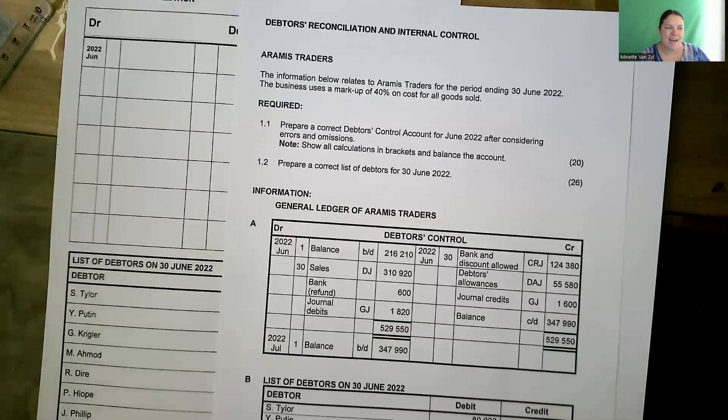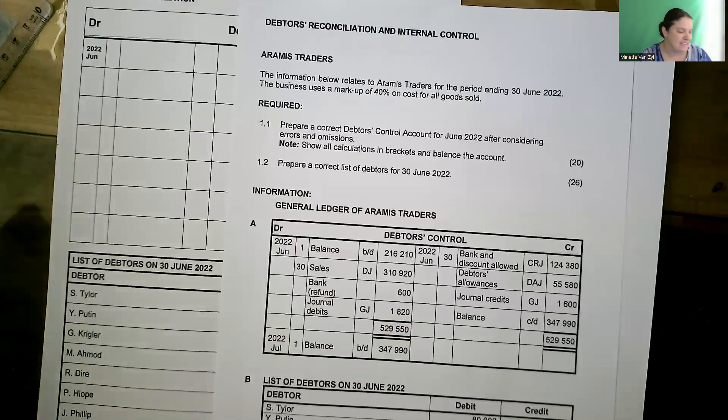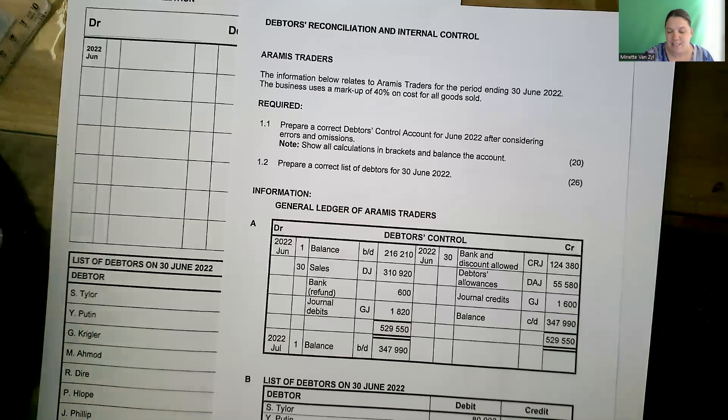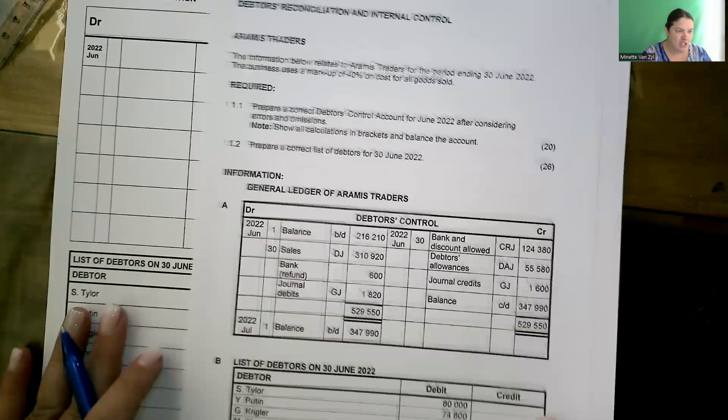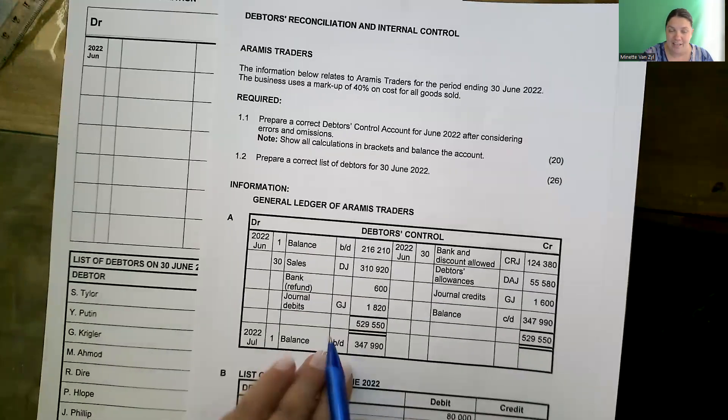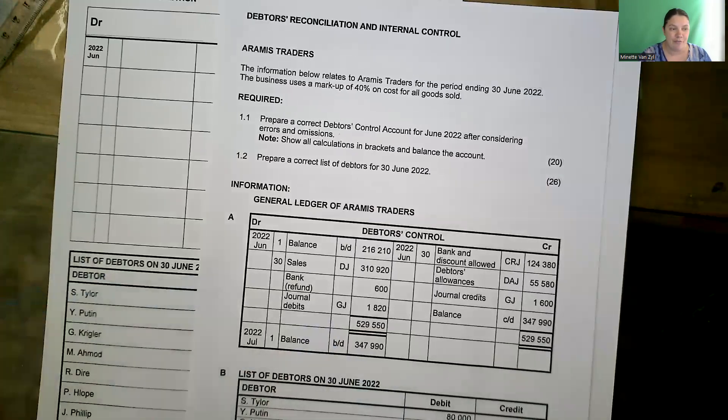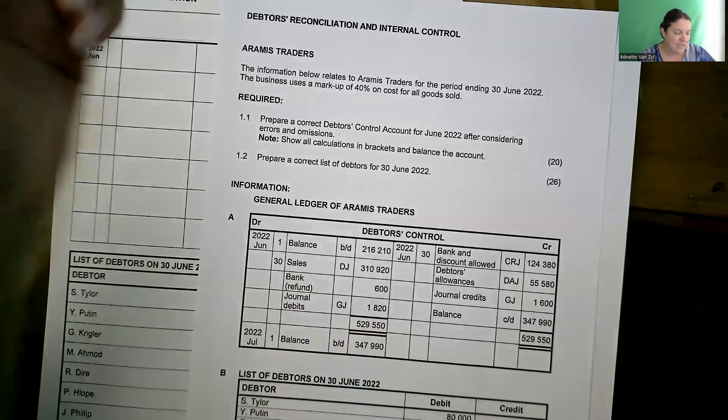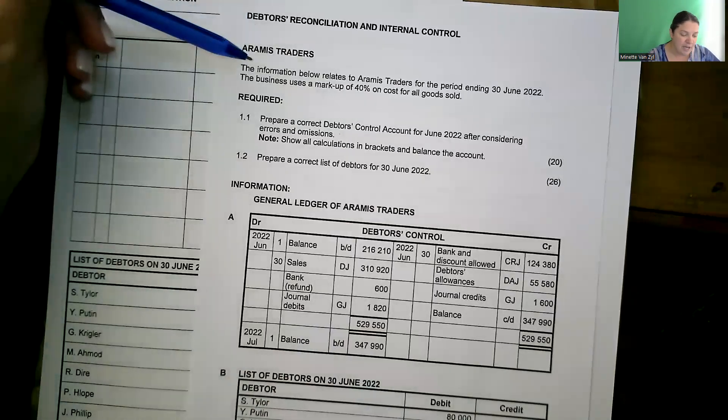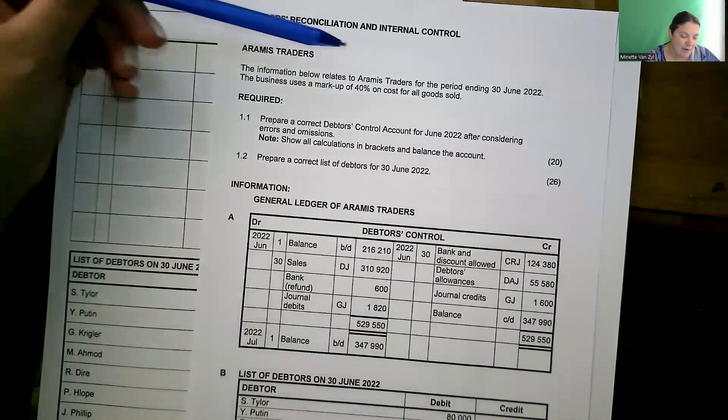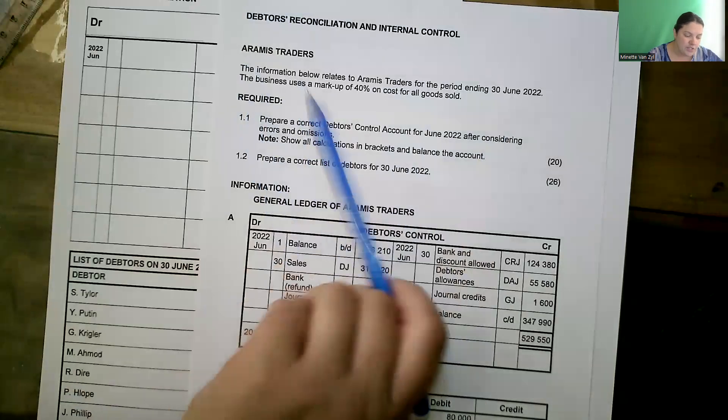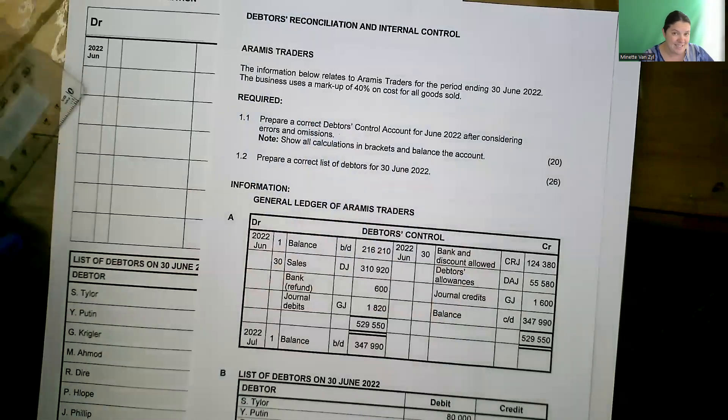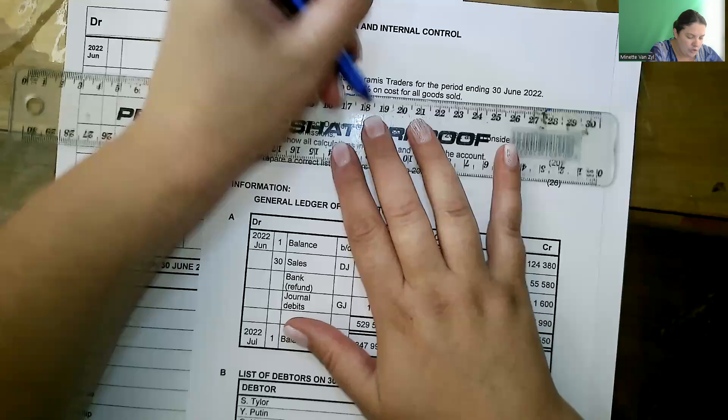Welcome to another fun accounting lesson. Today we are looking at debtors reconciliation based on grade 10. I have a question here and the documents will be available in the description so you're free to download them. It's Aramis Traders, the information relates to Aramis Traders for the period ending 30 June, uses a markup of 40% on cost for all goods sold.